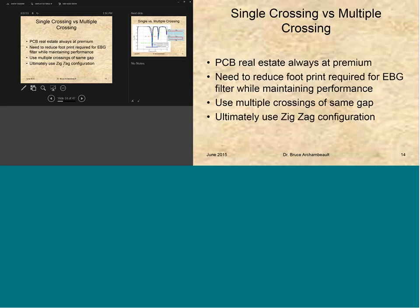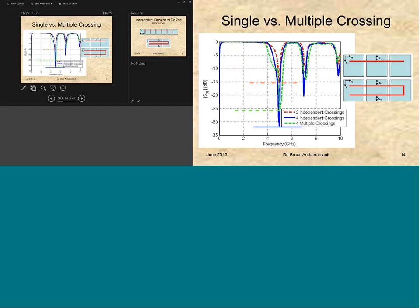All right, so now printed circuit board real estate, of course, is always at a premium. So we need to reduce the footprint of the EBG. So one of the things we tried to do was use a zigzag configuration. And what I mean by that is instead of just going straight across like the upper picture on the right is showing, we are going over and then back again like the lower picture on the right is kind of showing, so kind of zigzag back on itself.